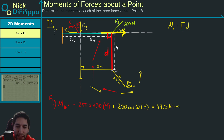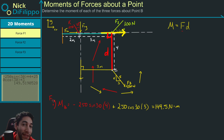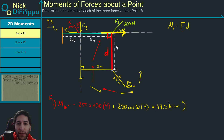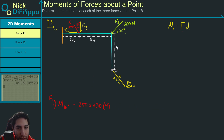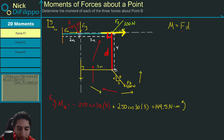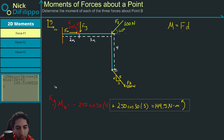Since this is a positive number, the sense of the moment is counterclockwise — which is the direction we assumed. If it had been negative, the magnitude would still be correct but the direction would switch to clockwise.